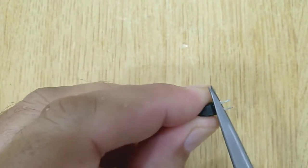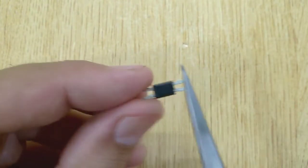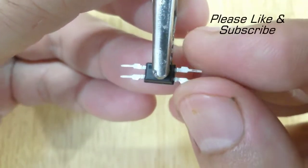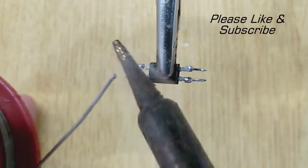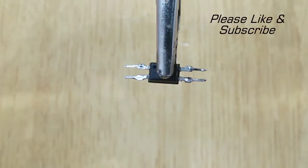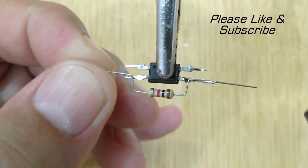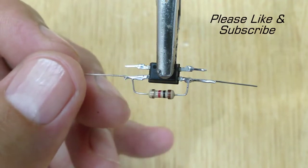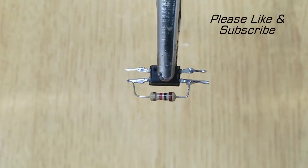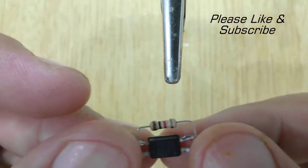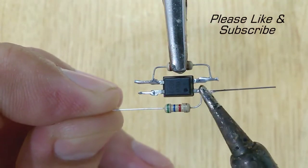Now start making the circuit. First apply some solder on all four pins of PC817. Then solder 1K ohms resistor with the third and second pins of PC817. After that solder 5.6K ohms resistor with the first pin of PC817.